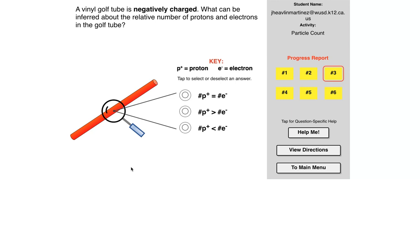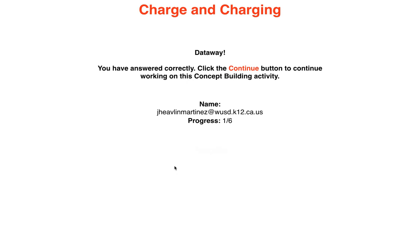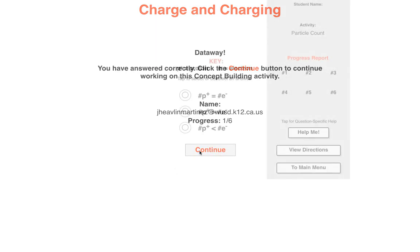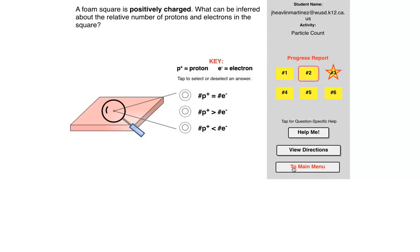Let's take a look at this question. A vinyl golf tube is negatively charged. What can be inferred about the relative number of protons and electrons in the golf tube? It's negatively charged, which means there's going to be more electrons than protons. We'll go ahead and choose this one, check our answer. Good to go.